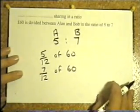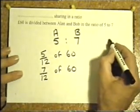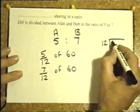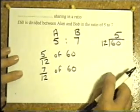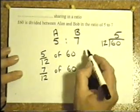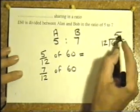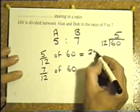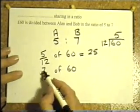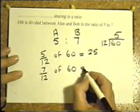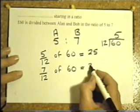Now 1/12 of 60. 1/12 of 60 would be worked out by working out 12s into 60. So 1/12 of 60 is 5. So 5/12 of 60 must be 5 of those 5s. Again if 1/12 of 60 is 5, then 7/12 of 60 must be 7 times 5, which is 35.